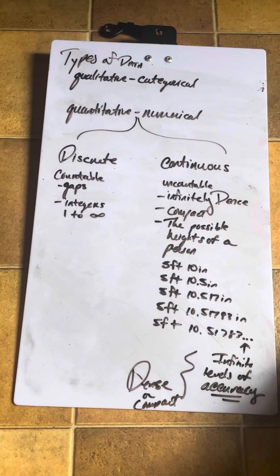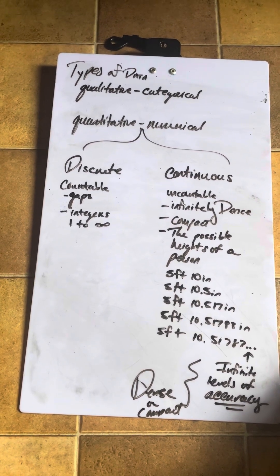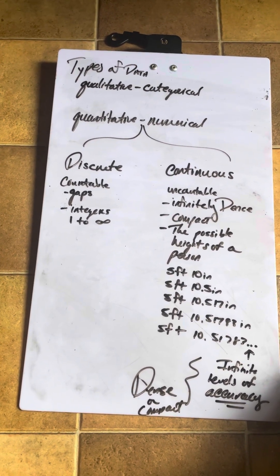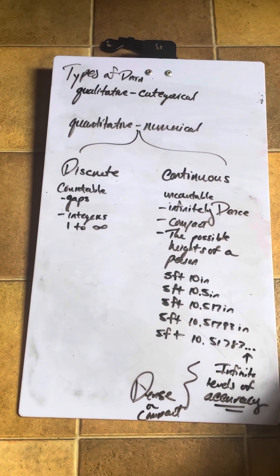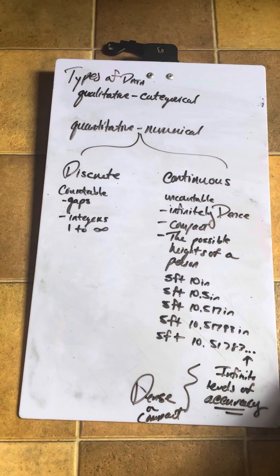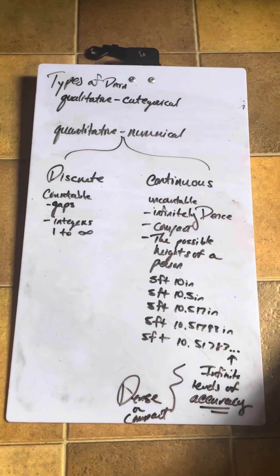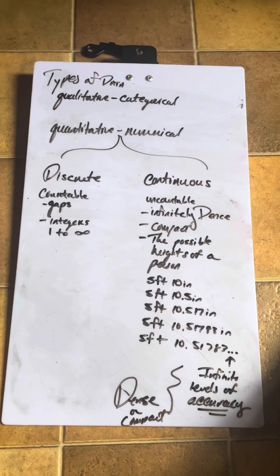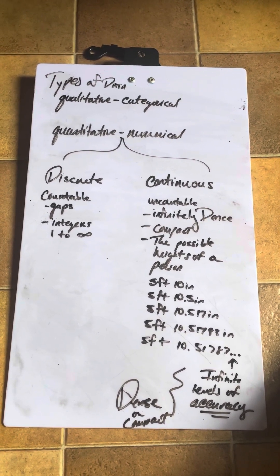You can't have half of a person. They either are a person or not. So it's one person, two person, three person, four person, five person. It's not one and a half people. So discrete is countable. You can have an infinite number, but you don't end up getting fractions or decimals typically.